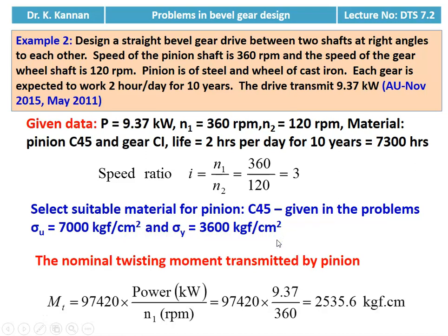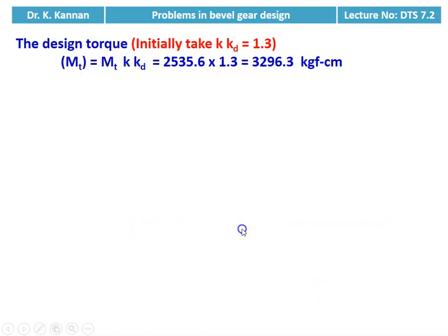We calculate the nominal twisting moment: MT = 97420 × power (kW) / pinion speed = 97420 × 9.37 / 360 = 2535.6 kilogram force centimeter. Then we calculate the design torque. Initially we take KKD = 1.3. Design torque MT(design) = MT × KKD = 2535.6 × 1.3 = 3296.3 kilogram force centimeter.